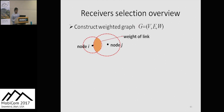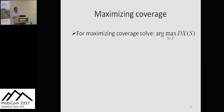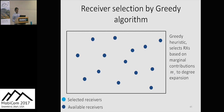Before the algorithm, I need to introduce two concepts. First, we construct a weighted graph using all available nodes, where the weight is the amount of overlap between the sensing regions of two nodes. Then we define a metric called degree expansion: given a set of nodes S and its neighboring set NS, degree expansion is the minimum overlap of S with its neighboring set. We want to maximize this minimum overlap for higher spatial coverage. The problem is to find a set S that maximizes the degree expansion. Unfortunately, this is NP-hard, so we use a greedy heuristic that selects a node in each iteration based on its marginal contribution to the degree expansion.